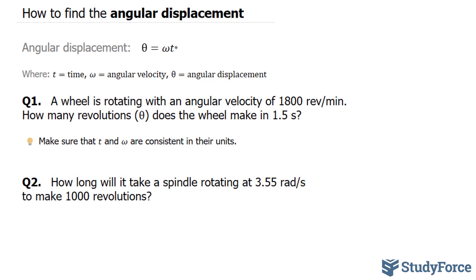Let's go ahead and answer question one. A wheel is rotating with an angular velocity, so omega is equal to 1800 revs per minute. How many revolutions theta does the wheel make in time 1.5 seconds?